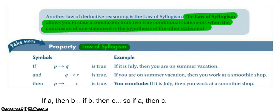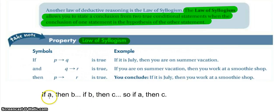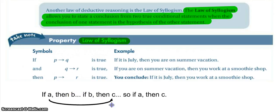Here's the law of syllogism. Essentially: if it is July, then you are on summer vacation. If you are on summer vacation, then you work at a smoothie shop. So our conclusion is if it's July, then you are working at a smoothie shop. Written out: if A then B, and if B then C — we can jump straight from A to C. If we know A, then we know B and C, so we go straight from A to C.